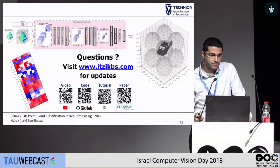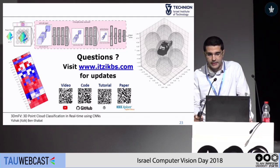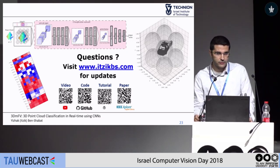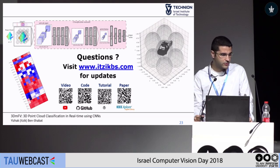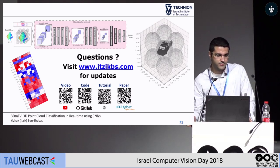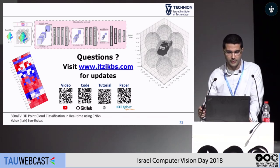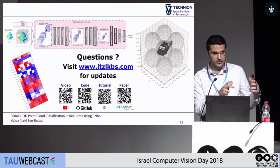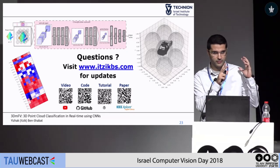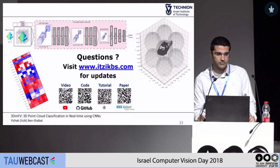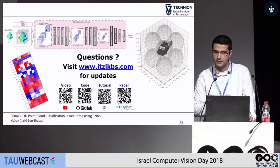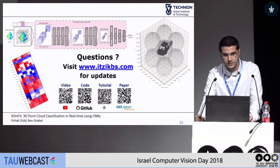Question: Have you tested on the KITTI dataset? Response: We did not test on KITTI. However, I expect it to perform similarly to the Sydney dataset. I think KITTI doesn't have a per-se classification benchmark, at least at the time of publication. The issue is that point clouds need to be separated — you need individual object point clouds for training. Question: Did you use intensity values? Response: No, it's just XYZ coordinates for the points.